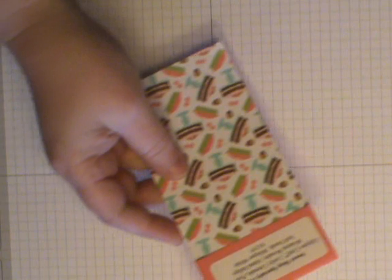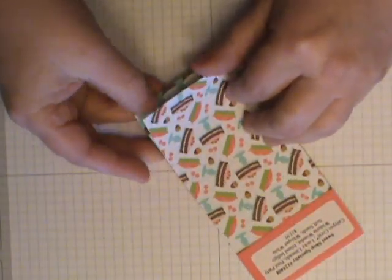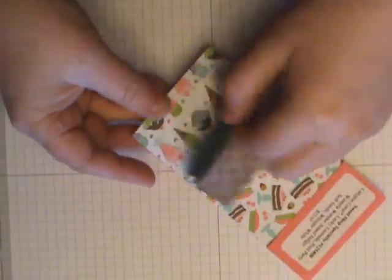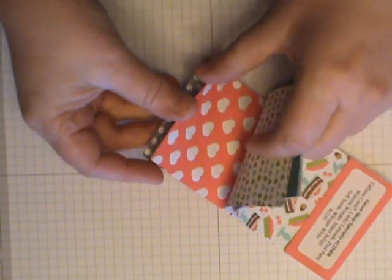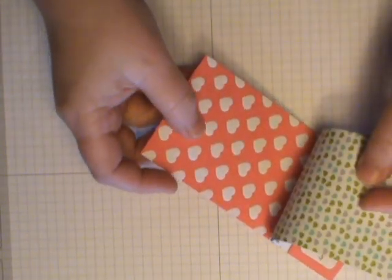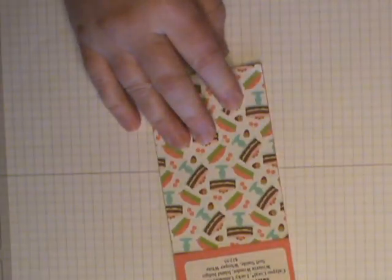We're going to use Stampin' Up's Sweet Shop Specialty Paper. I love this, it's great for birthdays, kids, cards, things like that. It also comes with a couple sheets of card stock that's embossed. So it's this Wisteria Wonder and this Coral Calypso. How cute is that? So let's get started.